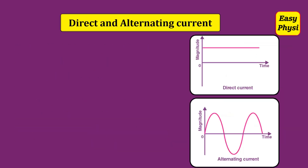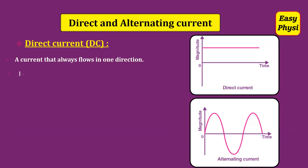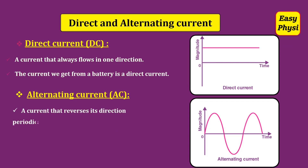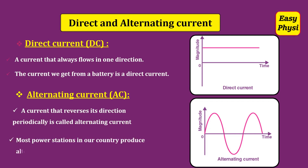Direct and Alternating Current. Direct Current: A current that always flows in one direction. The current we get from a battery is a direct current. Alternating Current: A current that reverses its direction periodically is called alternating current. Most power stations in our country produce alternating current.